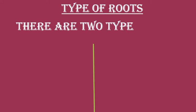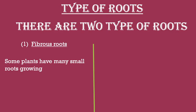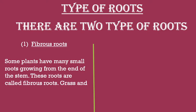Now we are going to learn types of root — root kitne prakar ke hote hain? There are two types of roots. First is fibrous root (fibrous root ko hum Hindi mein reshedar jad kehte hain). Some plants have many small roots growing from the end of the stem; these roots are called fibrous root. Grass and wheat have fibrous root. (Ghaas aur gehu mein reshedar jad hoti hain.)